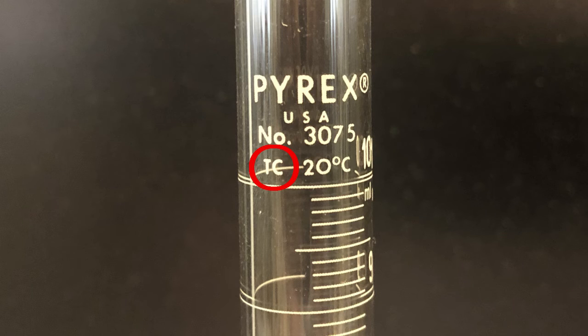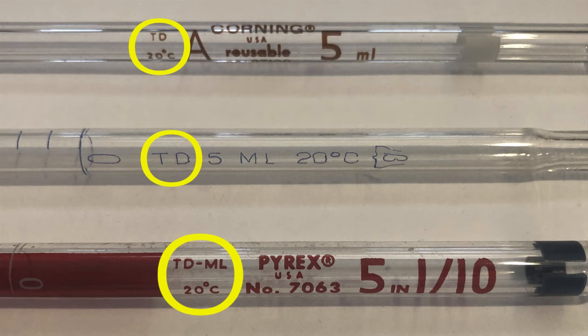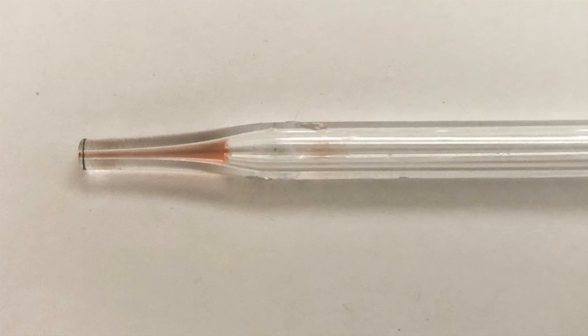Your device may be marked TC for to contain or TD for to deliver. To deliver means that last drop of liquid is supposed to remain. You don't have to worry about it.